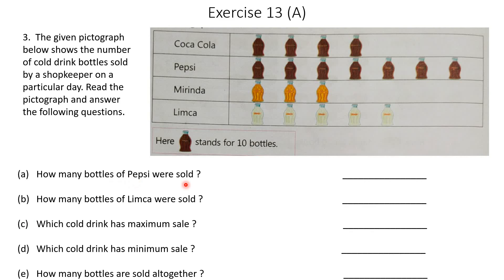How many bottles of Pepsi were sold? Counting the Pepsi row, there are 7 bottles shown. So 7 into 10 equals 70. There are 70 bottles of Pepsi sold. How many bottles of Limca were sold? Counting Limca, there are 5 bottles shown. So 5 into 10 equals 50. There are 50 bottles of Limca sold.